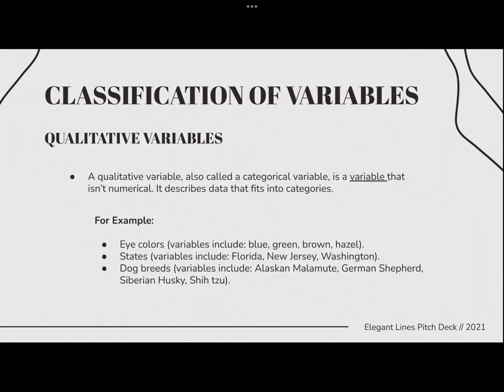We have the classification of variables. First, we have qualitative variables, also called categorical variables. It's a variable that isn't numerical — it describes data that fits into categories. For example, eye colors, which includes blue, green, brown, and hazel. Also the states, which includes Florida, New Jersey, and Washington. And dog breeds, which includes Alaskan Malamute, German Shepherd, Siberian Husky, and Shih Tzu.